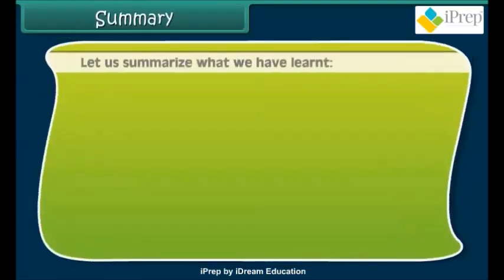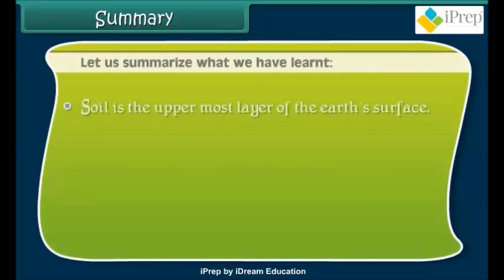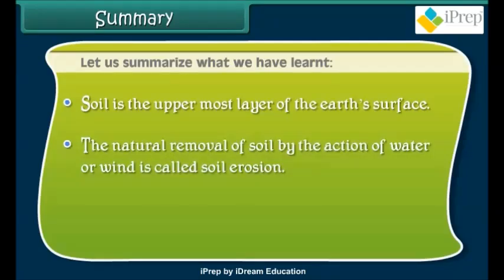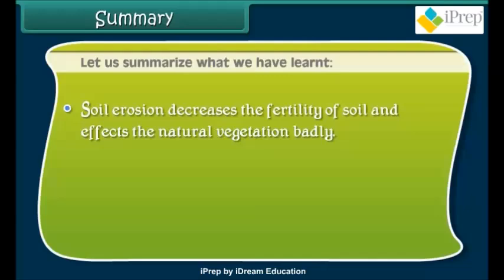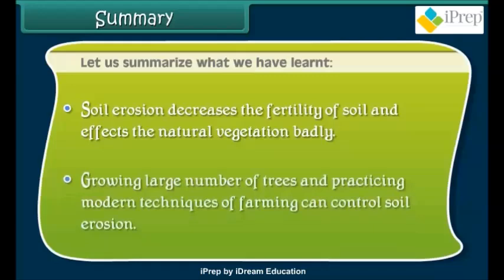Let us summarize what we have learned. Soil is the uppermost layer of the earth's surface. The natural removal of soil by the action of water or wind is called soil erosion. Water and wind movements, along with human activities, are responsible for soil erosion. Soil erosion decreases the fertility of soil and affects natural vegetation badly. Growing a large number of trees and practicing modern techniques of farming can control soil erosion.